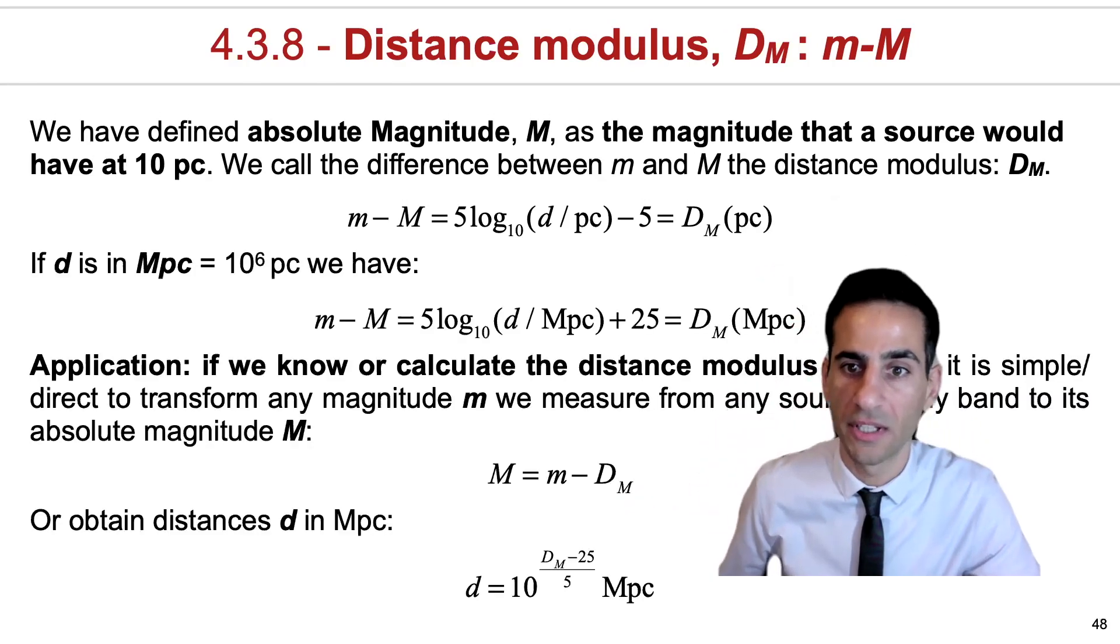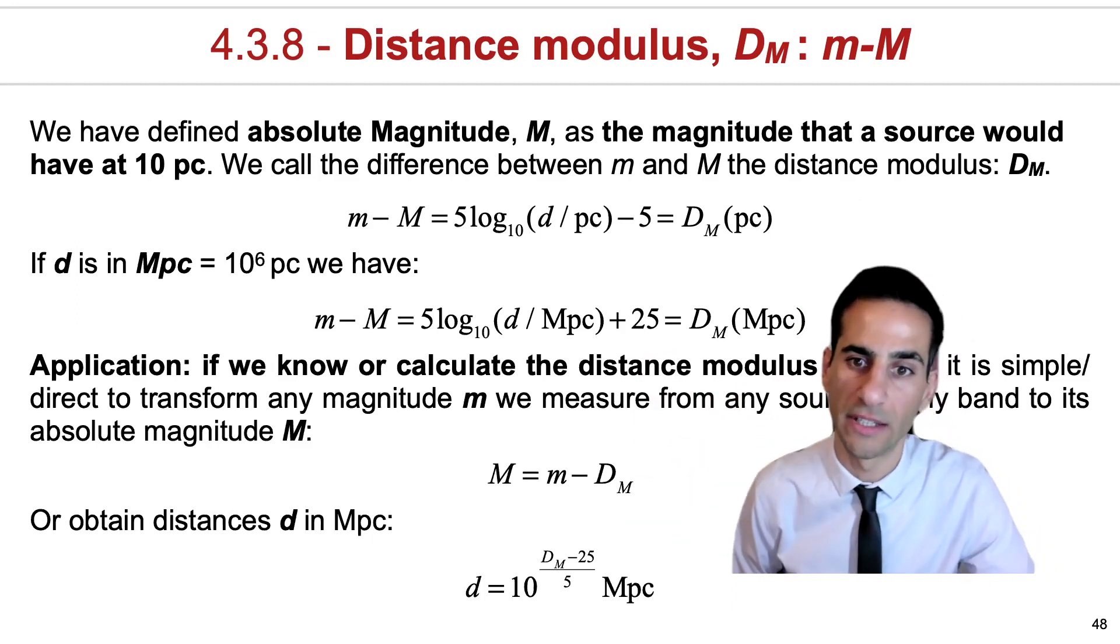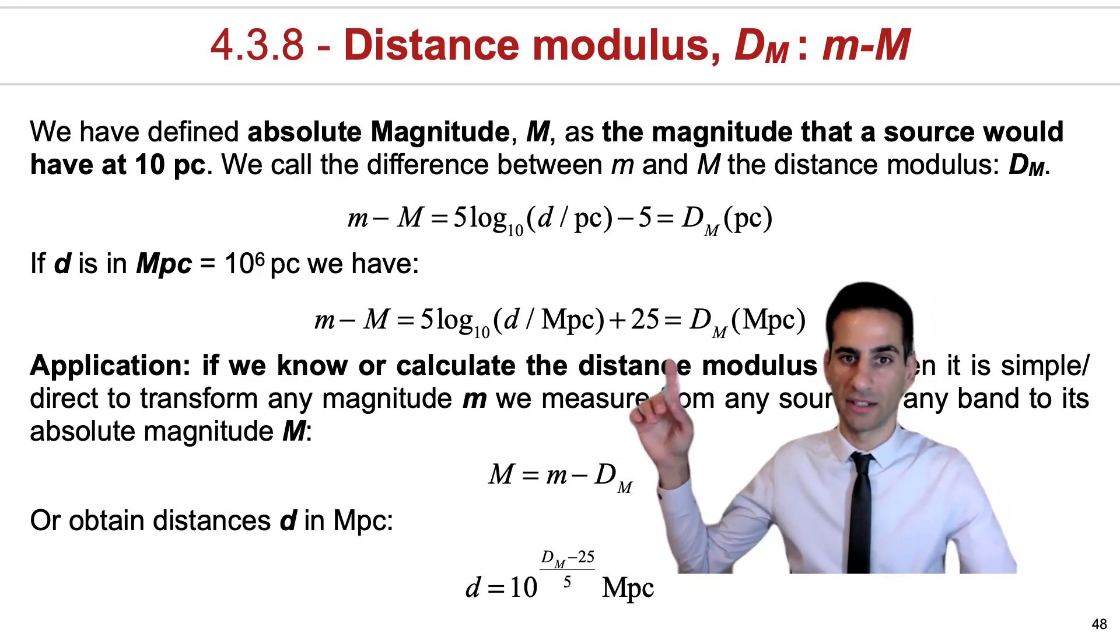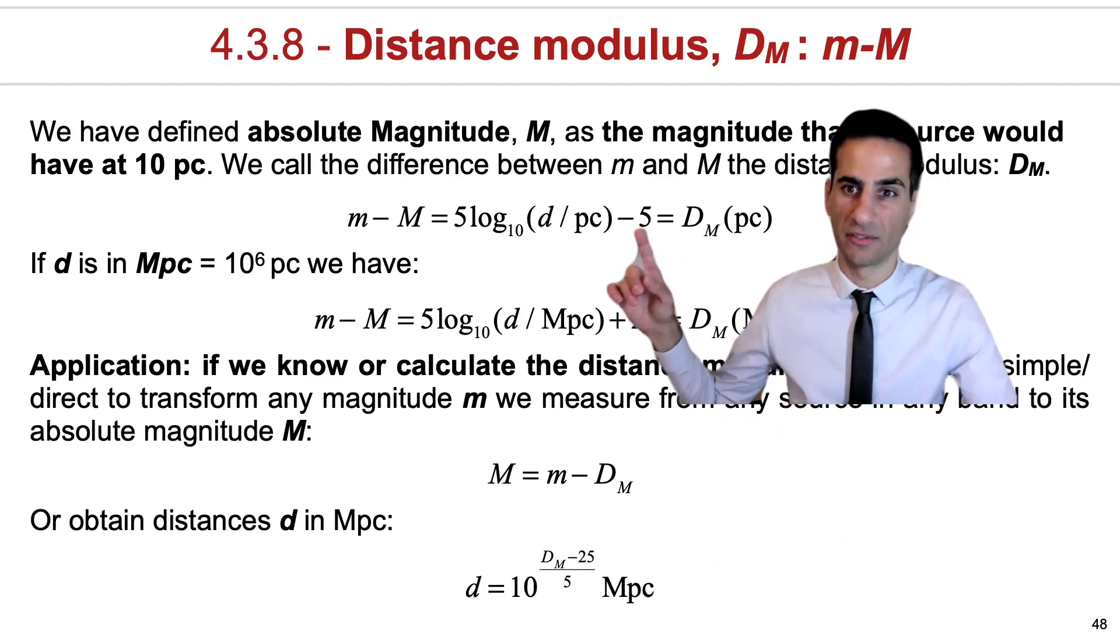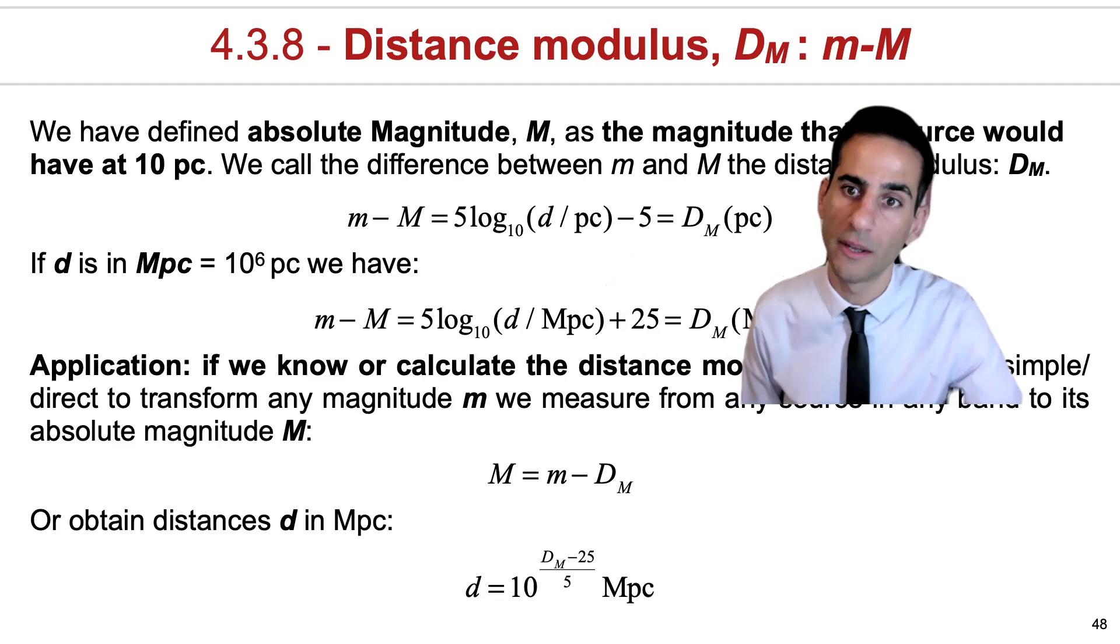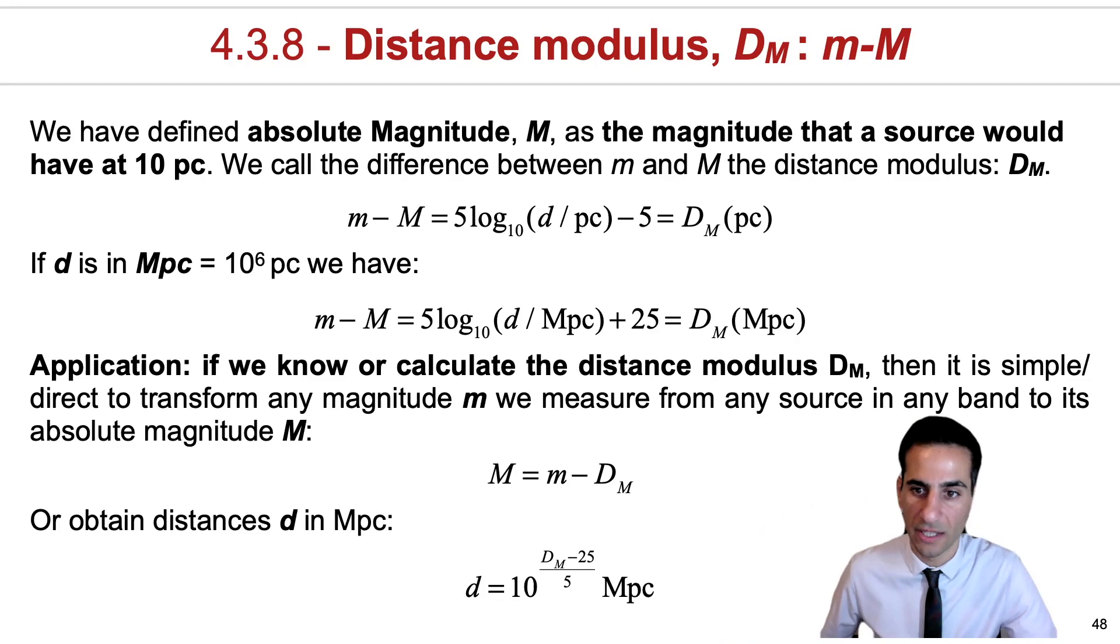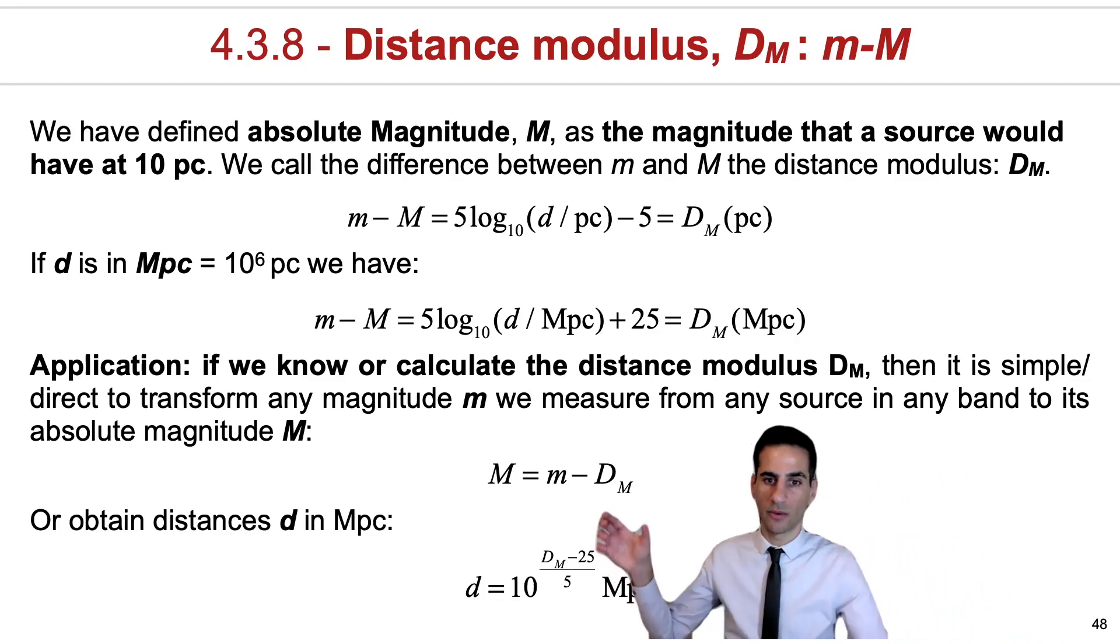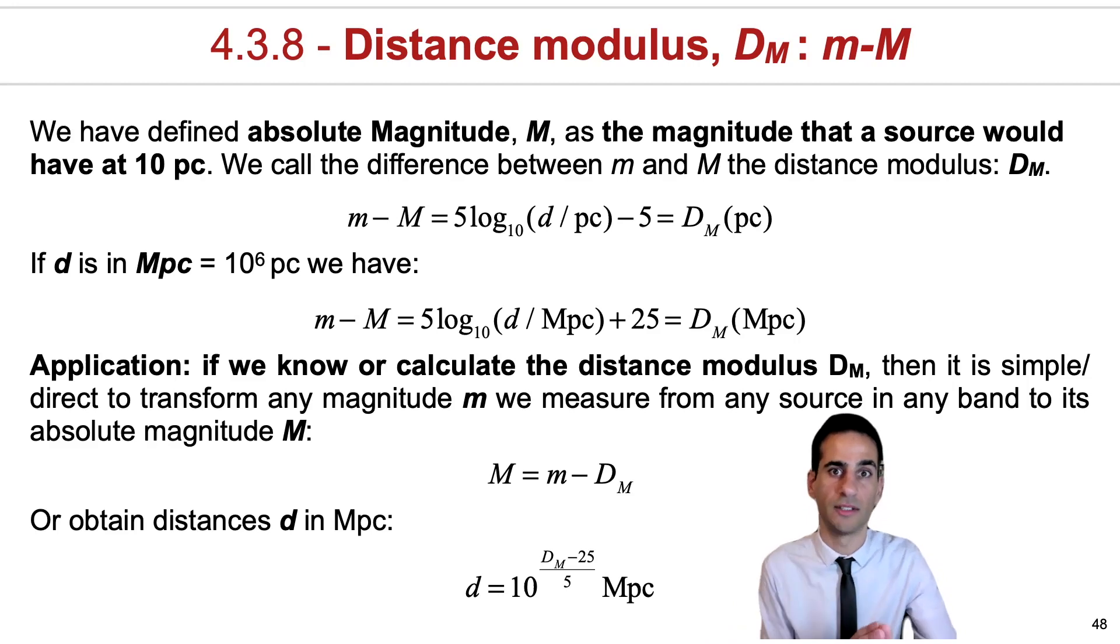And sometimes you want to calculate even larger distances. So you may want to transform it into megaparsec by essentially adding 25. While here, remember, you would be subtracting 5. This comes out from how we defined absolute magnitude. And the application of this is that sometimes because we want an absolute magnitude, what we actually need is a distance modulus. And if you subtract the distance modulus from an apparent magnitude, you get the absolute magnitude directly. And this might come in handy when we look at stars or distant galaxies.